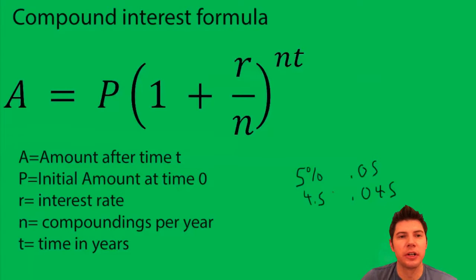N is the compoundings per year, so something like quarterly would be 4 for N, or monthly would be 12, or weekly would be 52, annually it would be 1. So that's how N works. And then T is the number of years, so just say three years.